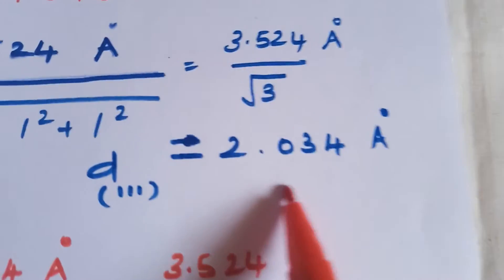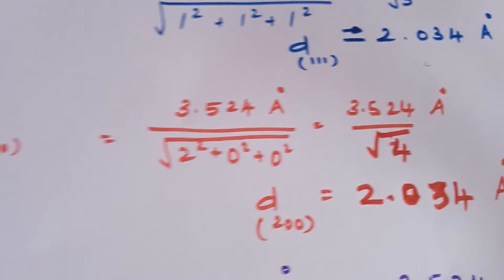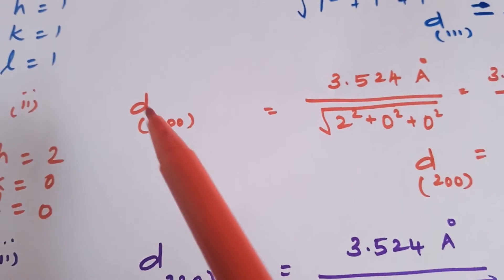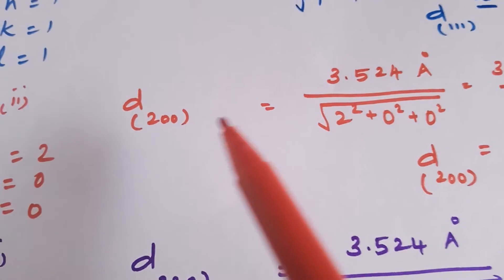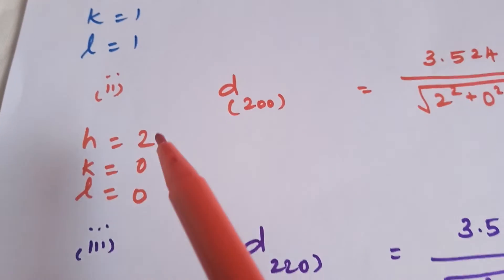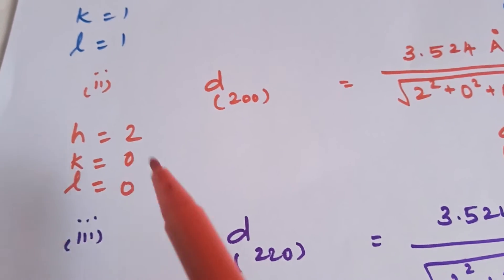2.034 angstrom unit and for the next plane d200 the hkl value is given here h value is 2, kl values are 0 and 0 respectively.